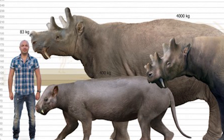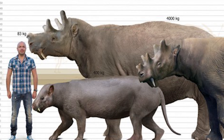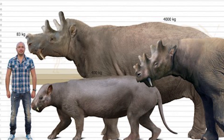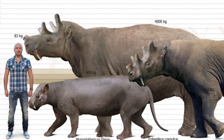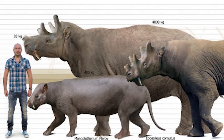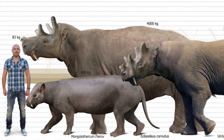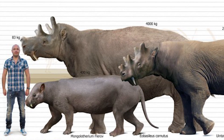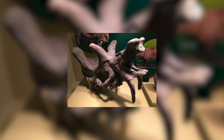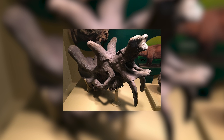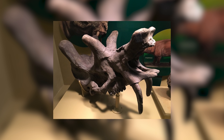Back to the Uintatheria — Eobasileus, found to indeed be a distinct genus by Cope, was even larger than Uintatherium, having massive blocky skulls of up to a metre long and standing up to 2.1 metres at the shoulder, weighing 2.5 tonnes plus. Being the largest Uintatherian, they also had a very large pair of tusks and ossicones, and overall would surely have been a very impressive animal to see.